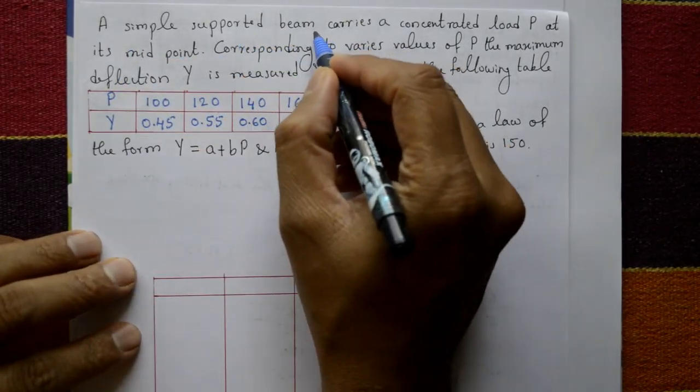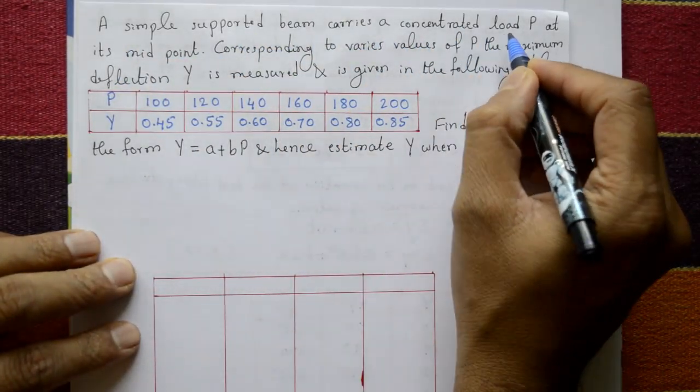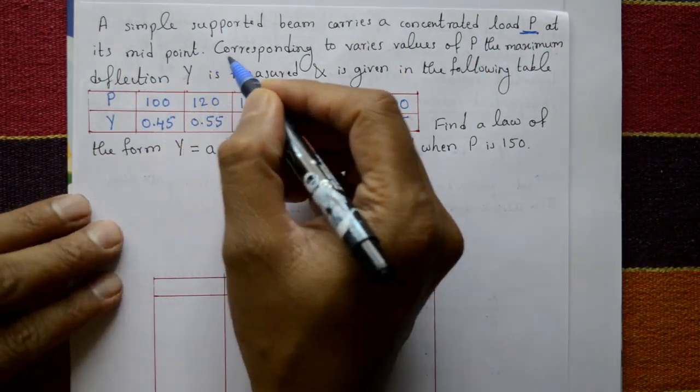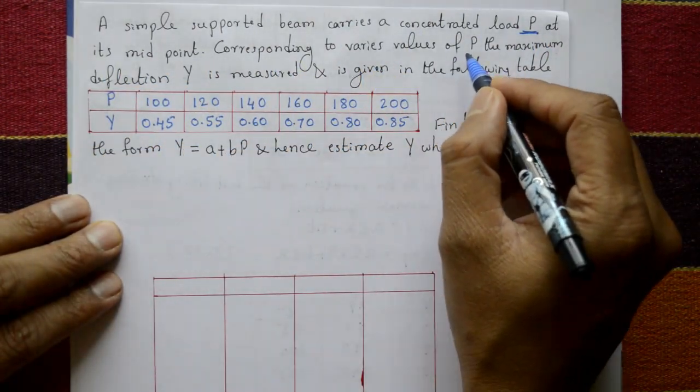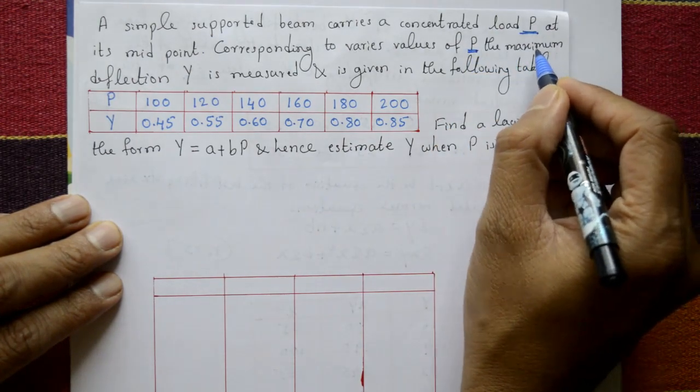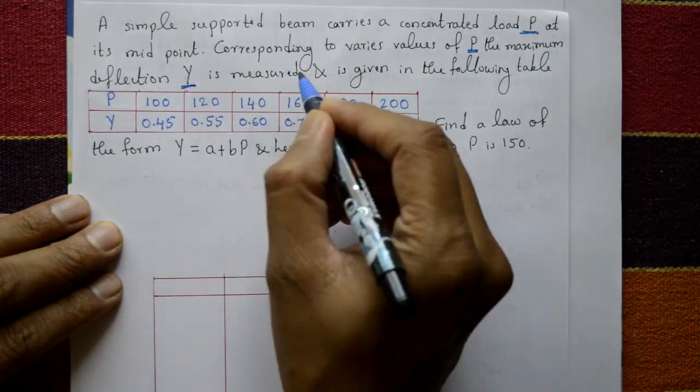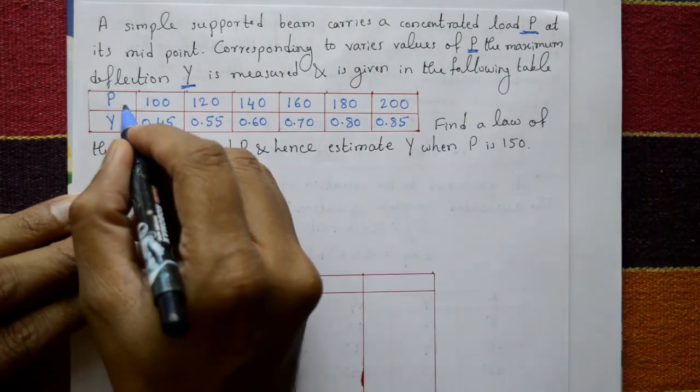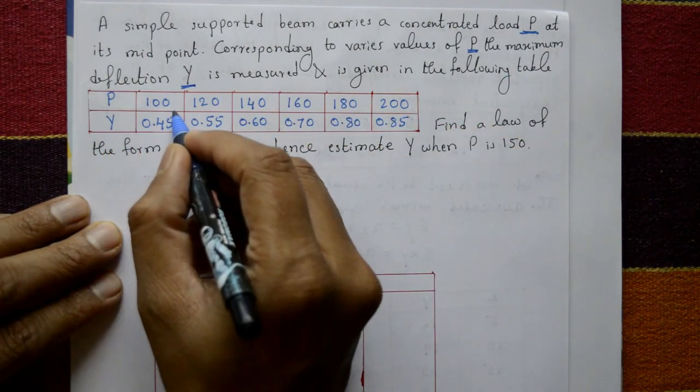A simple supported beam carries a concentrated load P at its midpoint. Corresponding to various values of P, the maximum deflection Y is measured and is given in the following table. P values are given: 100,